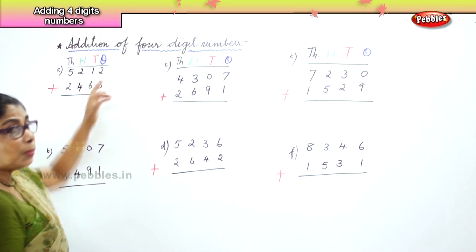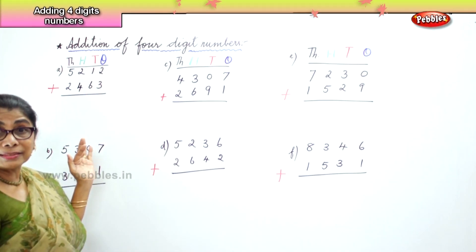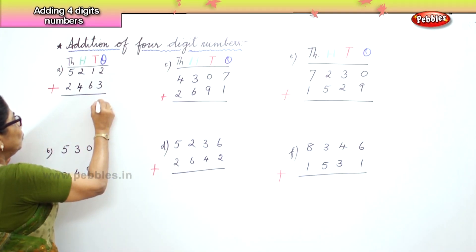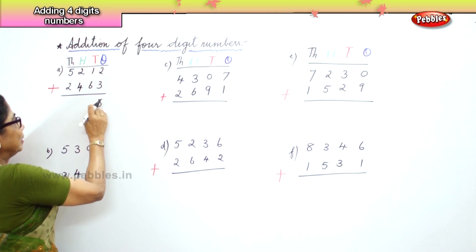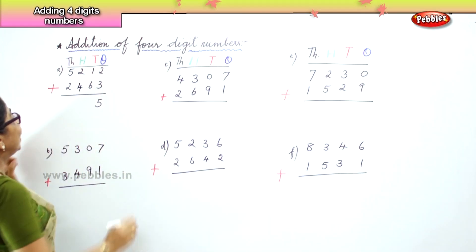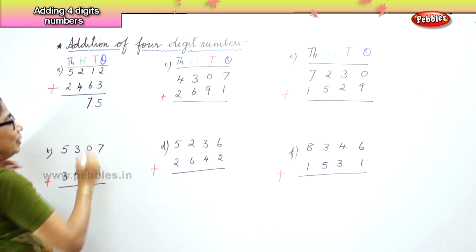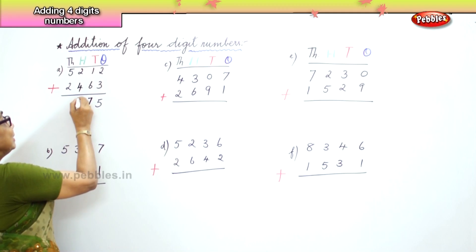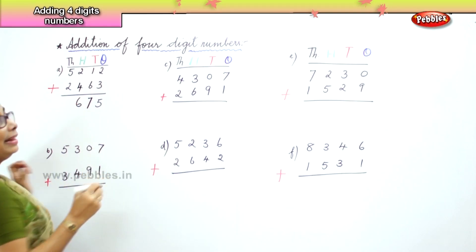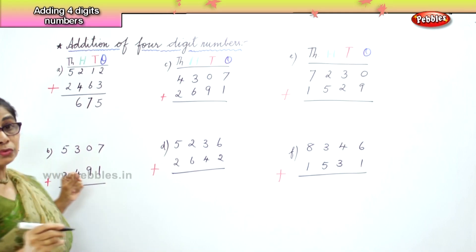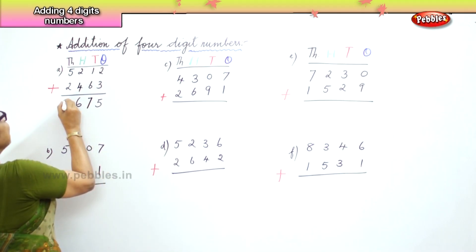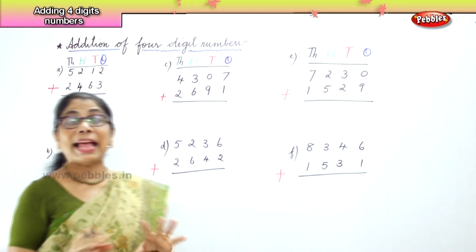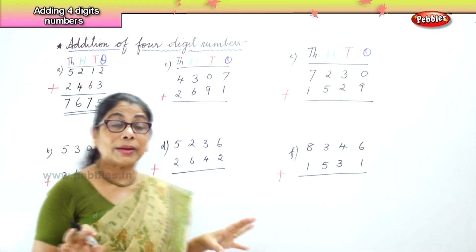In the ones place, you have two ones plus three ones — two plus three is five ones. That's very good, straight addition. Six ones and one one is seven ones. Two hundreds and six hundreds is eight hundreds. And in the thousands place, you have five thousand and two thousand — seven thousand. This is called straight addition of four digit numbers, and it is easy because there is no carry over.